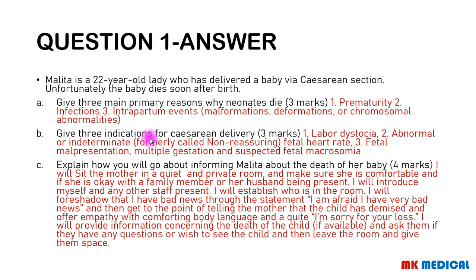I will foreshadow that I have bad news — a statement like 'I'm afraid I have some bad news' or 'I'm afraid I have very bad news for you.' Then I'll proceed to tell the woman that the child has demised: 'I'm afraid I have some bad news for you. Your baby has died.' This should be done in an empathic way with comforting body language, followed by a quiet 'I'm sorry for your loss.' Then I'll provide any available information about the death, ask if they have any questions or wish to see the child, and leave the room to give them space to begin the grieving process.